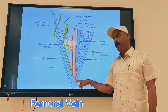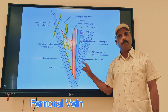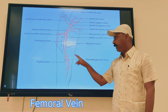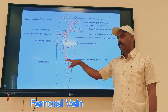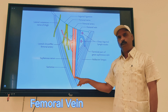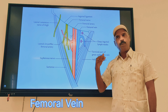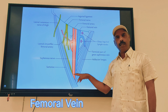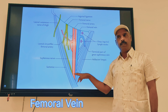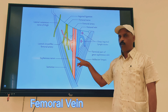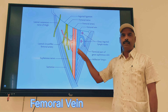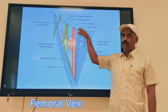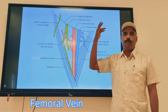The femoral vein is an upward continuation of the popliteal vein at the lower part of the adductor canal. It runs in the adductor canal, then enters into the femoral triangle. Then passing behind, it will be continued as the external iliac vein.